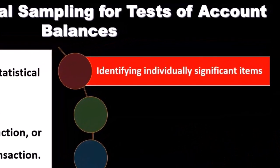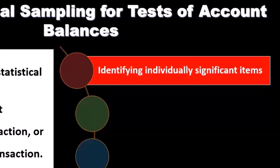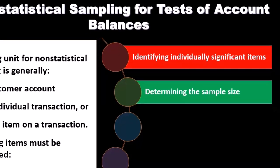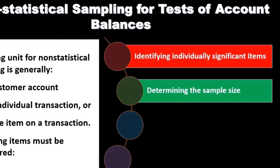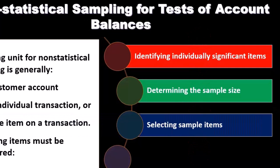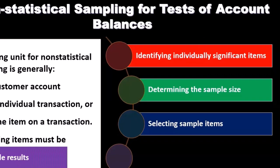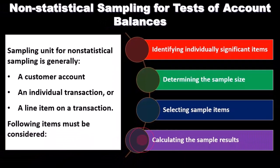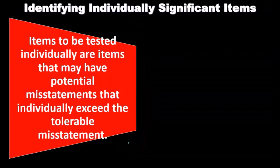The following items must be considered when thinking about non-statistical sampling: identify individually significant items, determining the sample size, selecting sample items, and calculating the sample results. We'll address some of these items in more detail now.